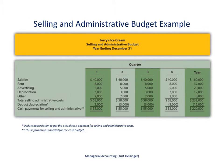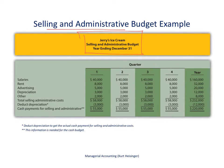Before getting into the details, I should remind you that the budgets in this lecture tie very closely to the budgets I present for the same company, Jerry's Ice Cream, in several other lectures. Take a look at those to see the complete set of operating budgets, including the sales budget, production budget, direct materials budget, and so on. This video focuses on the selling and administrative budget along with the budgeted income statement.